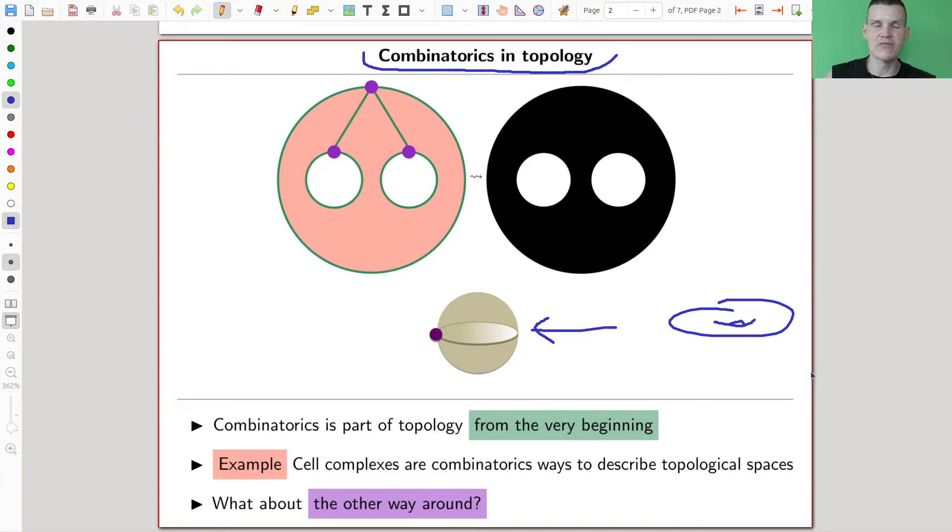But anyway, one direction is kind of really classical. So from combinatorics to topology, using methods from combinatorics in topology, formulating problems in topology in a combinatorial fashion, kind of very, very classic. Standard example would be cell complexes, which is like a combinatorial way, which just really essentially is a beefed-up version of a graph. So here is the topological space, kind of a disk with two holes, and here is like a graph-type model of that same space.